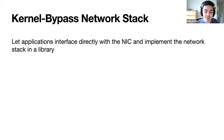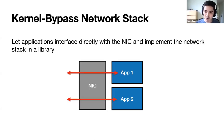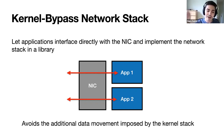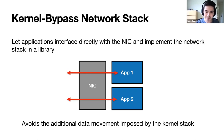A natural alternative that has been proposed by many works is to use a kernel bypass network stack. The idea is simple: instead of having the kernel mediating all the data transfers, we allow applications to interface directly with the NIC. As such, you have to implement the network stack as a library inside the application. And because you no longer have this data movement overhead, the performance you get is way better. There are many papers using variations of this strategy and they can get much better performance.